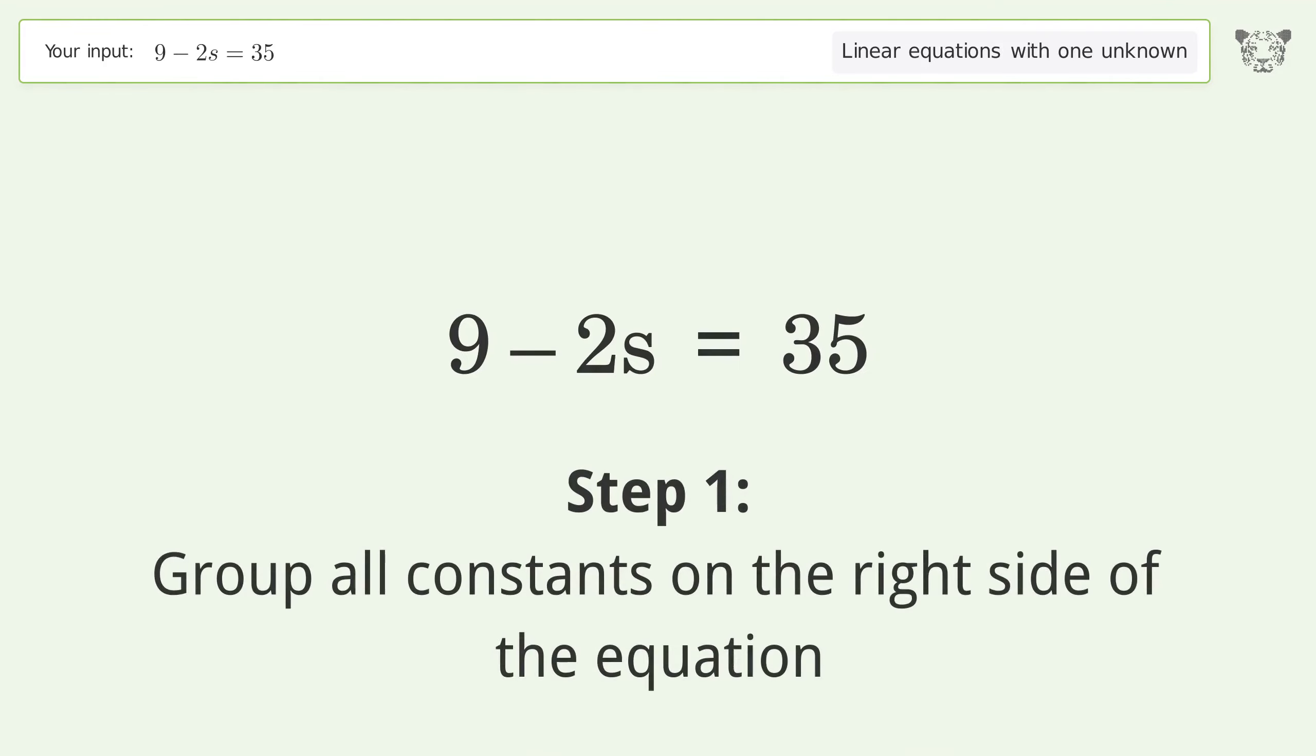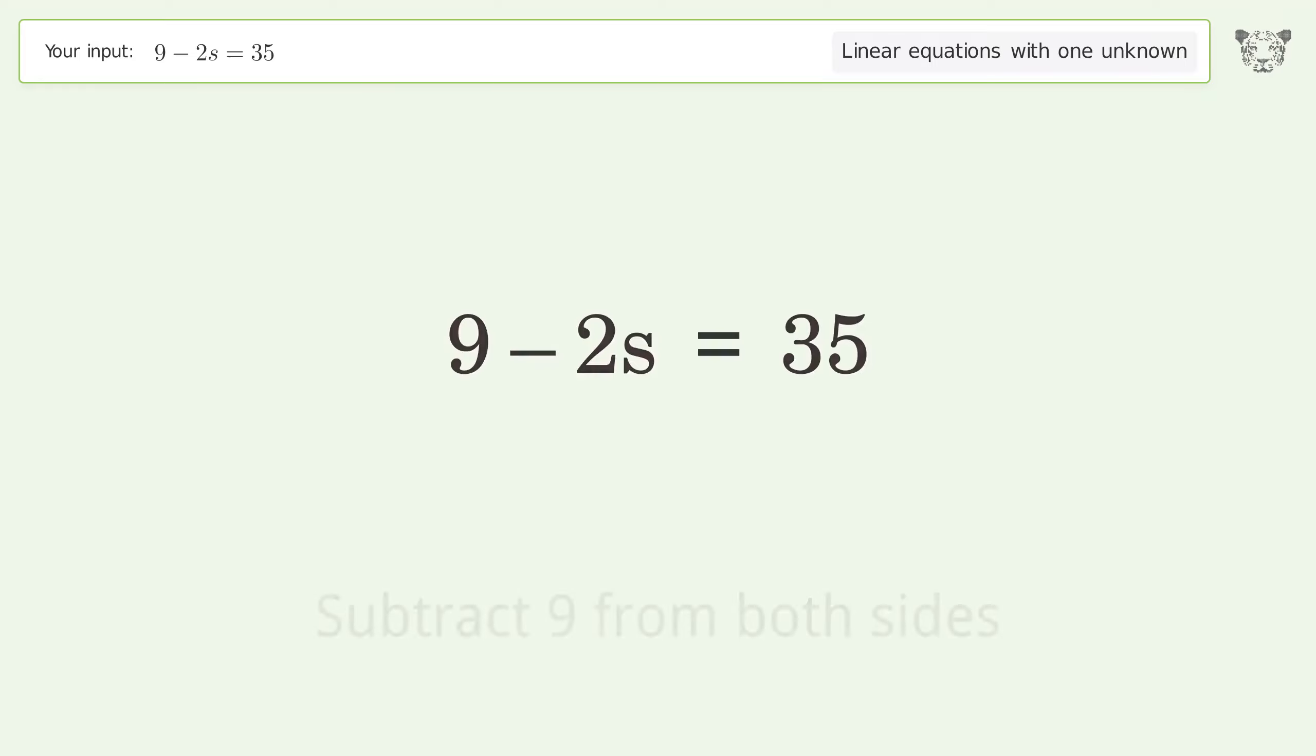Group all constants on the right side of the equation. Subtract 9 from both sides. Group like terms. Simplify the arithmetic.